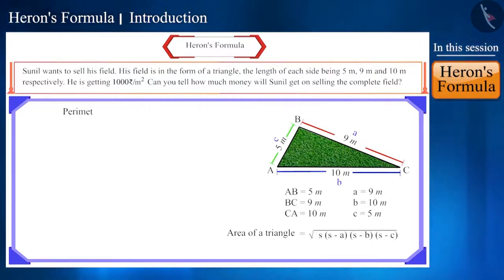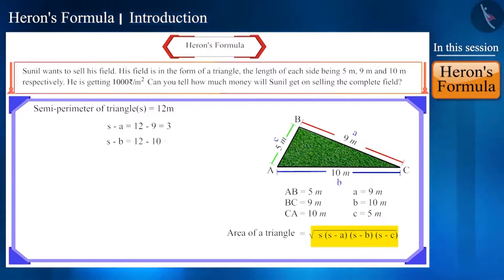The perimeter of the triangle is 24 meters and its semi-perimeter will be 24 divided by 2 which is 12 meters. Now by finding the value of the terms within the brackets s minus a, s minus b and s minus c with the help of the formula we will find the area.